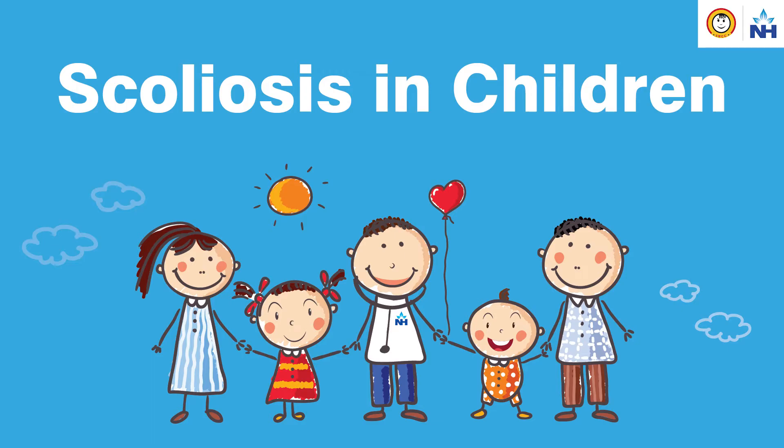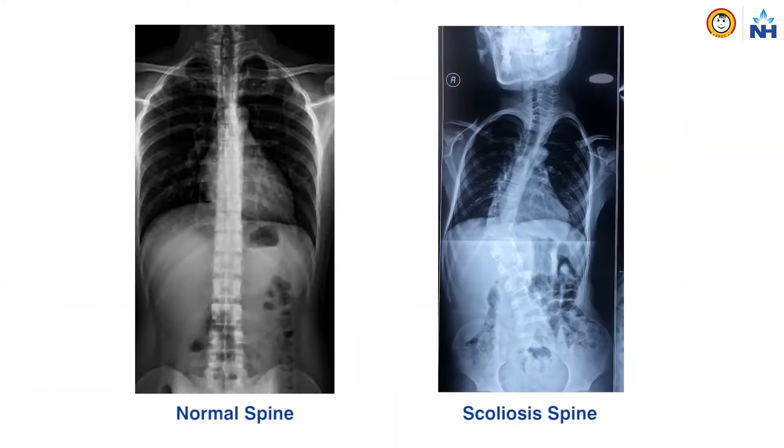Scoliosis is an abnormal curvature in the spine. Majority of spines are straight — patients are born with a straight spine. However, with aging or because of some birth defect, these spines start curving. This curvature of the spine in the frontal plane is called scoliosis.